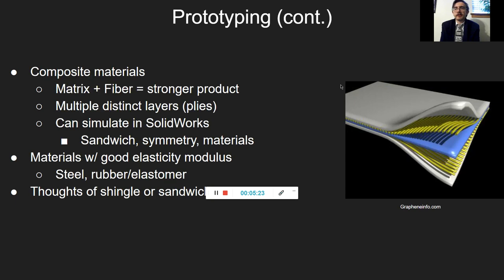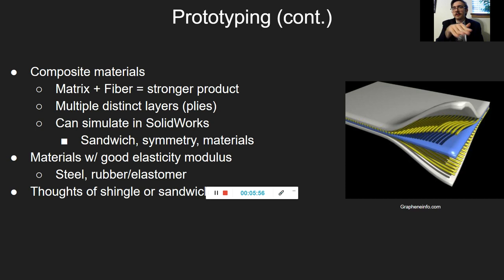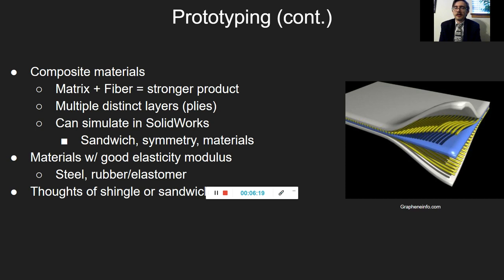I decided to go with composite materials, because composites are when you have multiple materials that are chemically and physically different, and you combine them to make a much stronger product. You combine your matrix — which is typically something protective — and your fiber, which reinforces the strength of the material, making a stronger product overall. Composites have distinct layers: for example, asphalt, then fiberglass, etc. They can be simulated in SOLIDWORKS as sandwich, symmetrical, and other configurations. Elastomers — elastic polymers — and metals such as steel and metal alloys are really good composite materials, and I wanted to experiment with those.